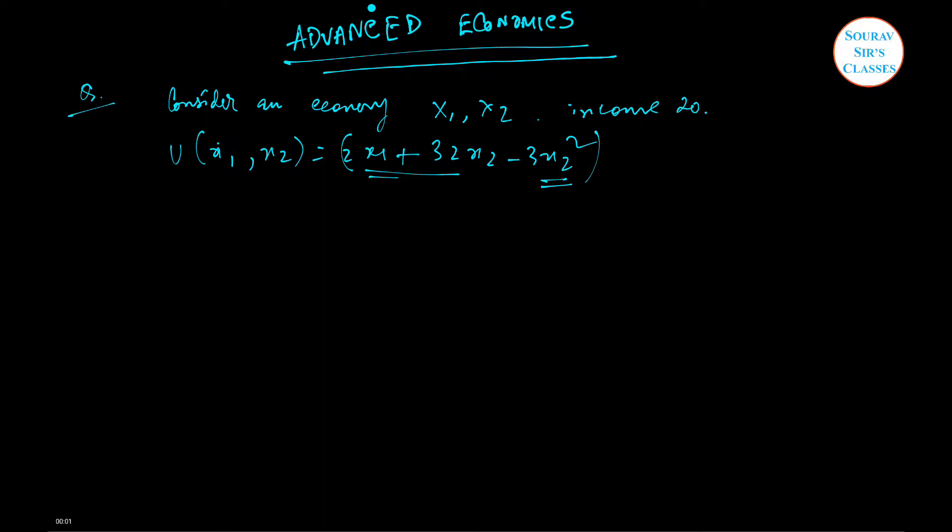Hello, this video is about some advanced topics in economics and would be useful for competitive examinations as well. This problem is based on mathematical economics where we have given an economy where two goods are sold, x1 and x2, and a person's income is 20 units.